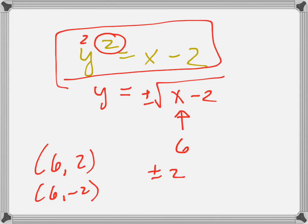Plug in 2 here, or plug in negative 2 here. Either way, you're going to get a positive 4 out, and when you plug in the 6 here, you're going to get a positive 4 out. So this is not a function.